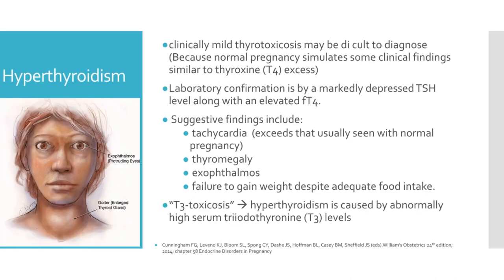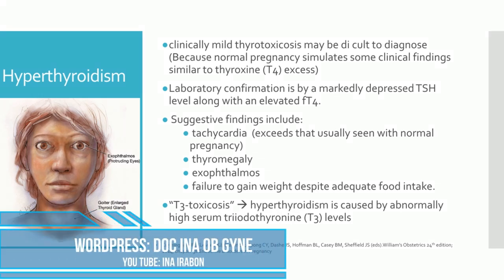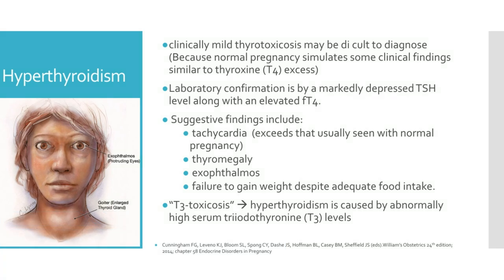Because normal pregnancy simulates some clinical findings that are similar to thyroxine excess, clinically mild thyrotoxicosis may be very difficult to diagnose. Suggestive findings include tachycardia that exceeds that usually seen with normal pregnancy, thyromegaly, exophthalmos, and failure to gain weight despite adequate food intake. Laboratory confirmation is by a markedly depressed TSH level, along with an elevated FT4. Rarely, hyperthyroidism is caused by abnormally high serum triiodothyronine or T3 levels, which is also called T3 toxicosis.